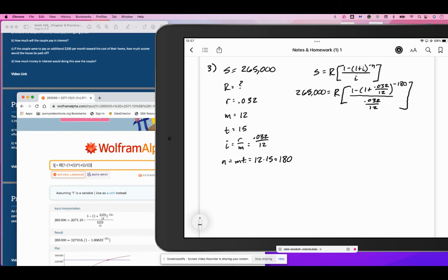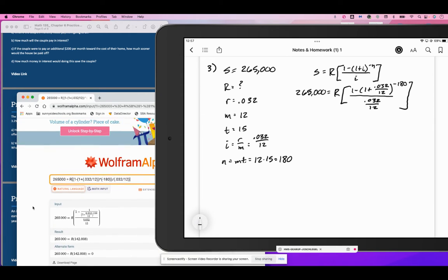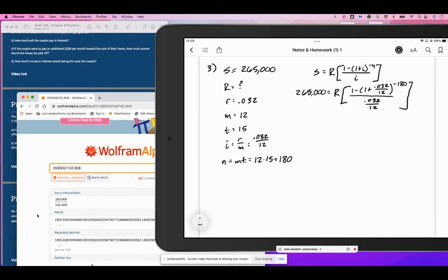So our 265 is there, the r we don't know, i is 0.032 over 12, n is 180. We have to divide by 142808, and we end up with 1855.64.